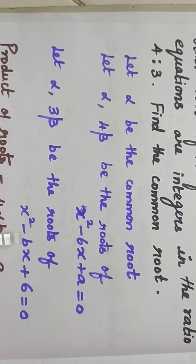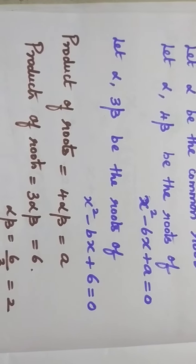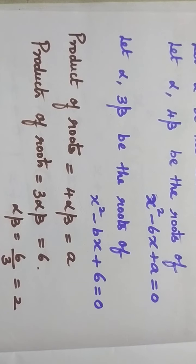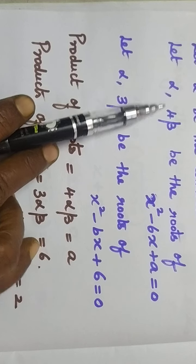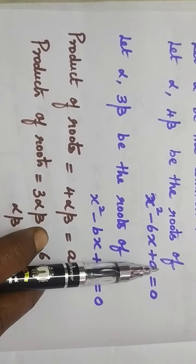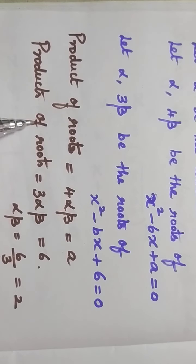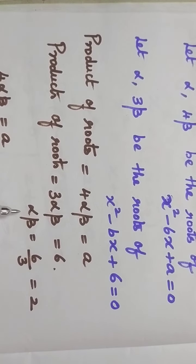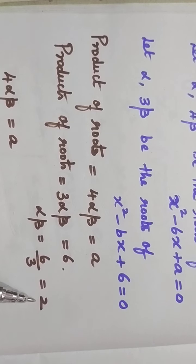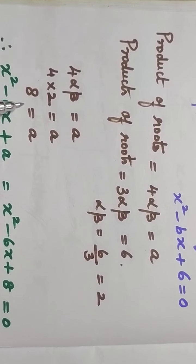So alpha and 3 beta are roots of the equation x squared minus bx plus 6 equals 0. We are going to find the common root first using the product of roots. The product of roots: 4 alpha times beta equals a, since product of roots is c divided by a, which equals a. For the second equation, alpha times 3 beta equals 6, giving 3 alpha beta equals 6, so alpha beta equals 2. Since alpha beta equals a, we get a equals 4 times 2, so a equals 8.